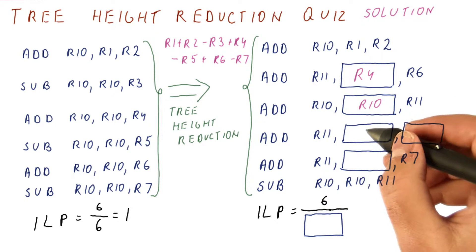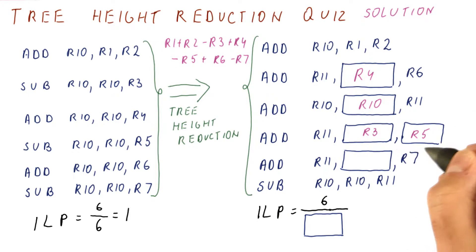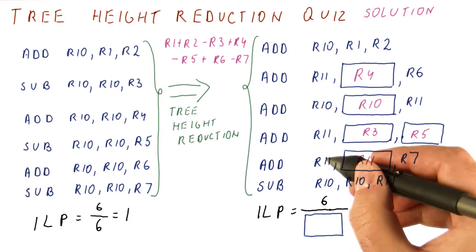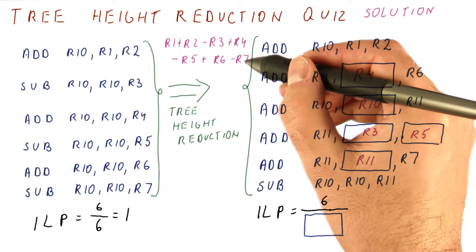So clearly what we're doing here is we're simply adding up R3, R5, and then R7 is added to that. So this needs to be R11. So now R11 has R3 plus R5 plus R7.